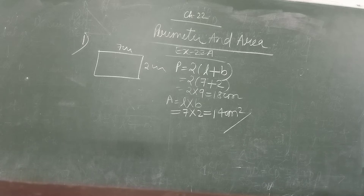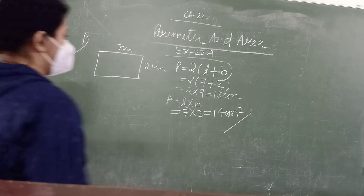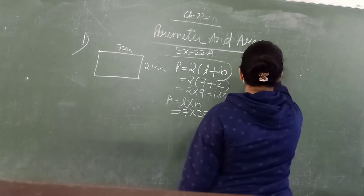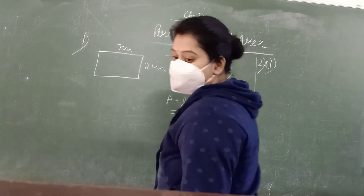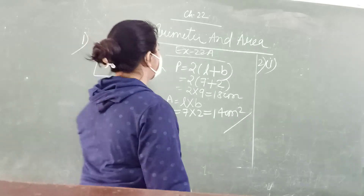Now, second question. In the second question we have a square. Other parts you can solve from the first question. In second question, we have a square whose side is given. In the first part, the side is 30 centimetres.